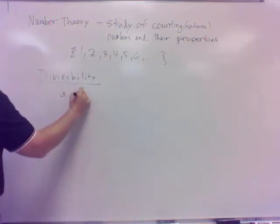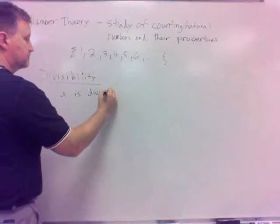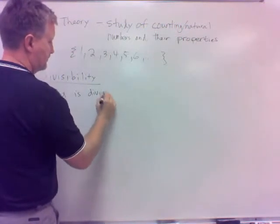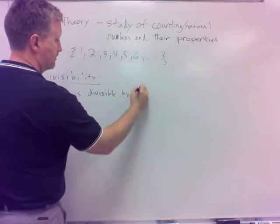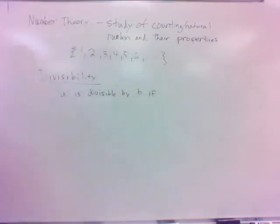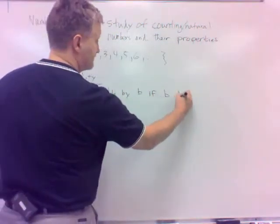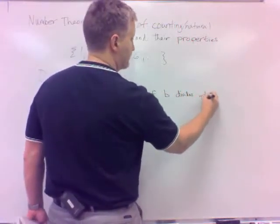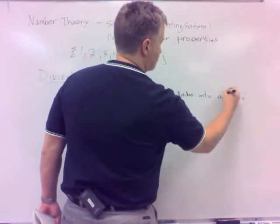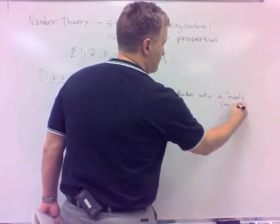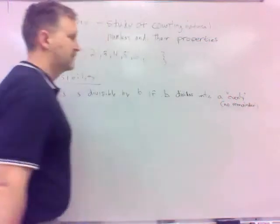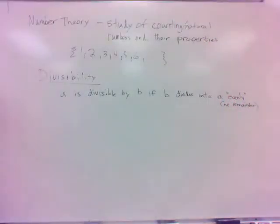A is divisible by B — if B goes into A evenly, divides into A evenly, no remainder. So 10 is divisible by 2, or 10 is divisible by 5. But 10 is not divisible by 3 — 3 doesn't go into 10 evenly.